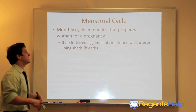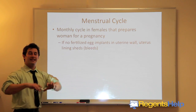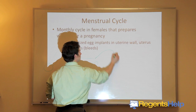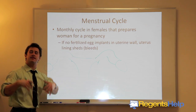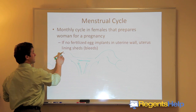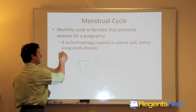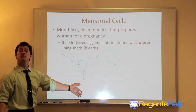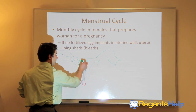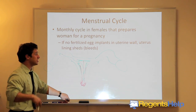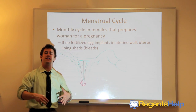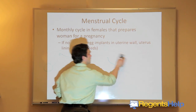The menstrual cycle is a monthly cycle of females that prepares the woman for pregnancy — it gets the lining of the uterus ready. As the menstrual cycle progresses, the walls of the uterus will build up, getting ready for the egg to come down. If there's no sperm, the egg continues down unfertilized, does not implant, and comes out the vagina. Instead of using the extra uterine lining, the woman will get her period — the egg does not implant, so the uterine lining will shed and drop out of the vagina.